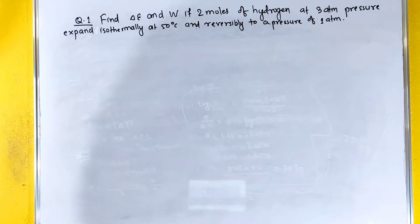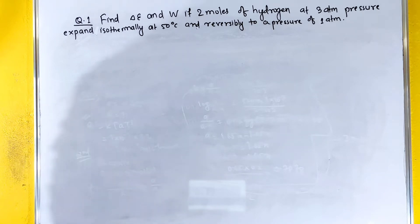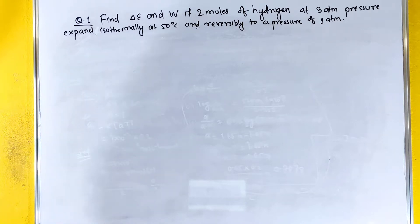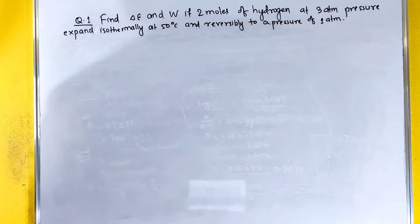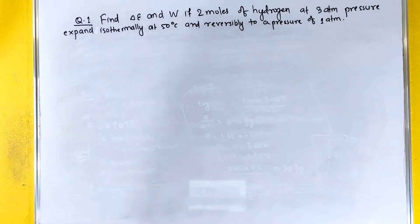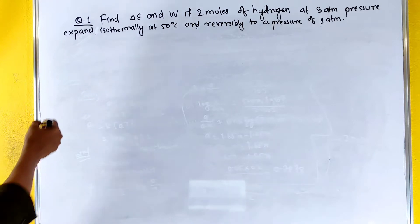Find delta E and W if 2 mol of hydrogen at 3 ATM pressure expand isothermally at 50 degrees Celsius and reversibly to a pressure of 1 ATM. We can see the conditions and just solve for the solution.